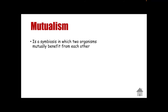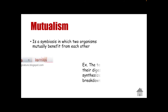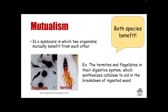Next, we have mutualism. By the name itself, this means two organisms mutually benefit from each other — both species benefit. In commensalism, only one species benefits. One example of mutualism is the termites and the flagellates in their digestive system, which synthesize cellulose to aid in the breakdown of ingested wood. The termites can digest wood because of the flagellates living in their intestine. The termites are helped by the flagellates to get food, and the flagellates are also protected by the termite. Another example is the honeybee bringing pollen to a desert shrub.